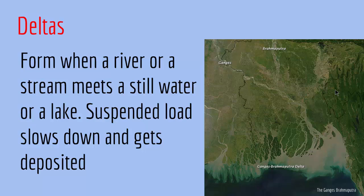The deposited materials create three types of beds: foreset beds, topset beds, and bottomset beds. Foreset beds are composed of coarse particles that drop almost immediately when they enter the water and they form layers that slope down current from the delta front. The foreset beds are usually covered by thin horizontal topset beds deposited during flood stage, and the finer silts and clays settle away from the mouth in nearly horizontal layers called bottomset beds.